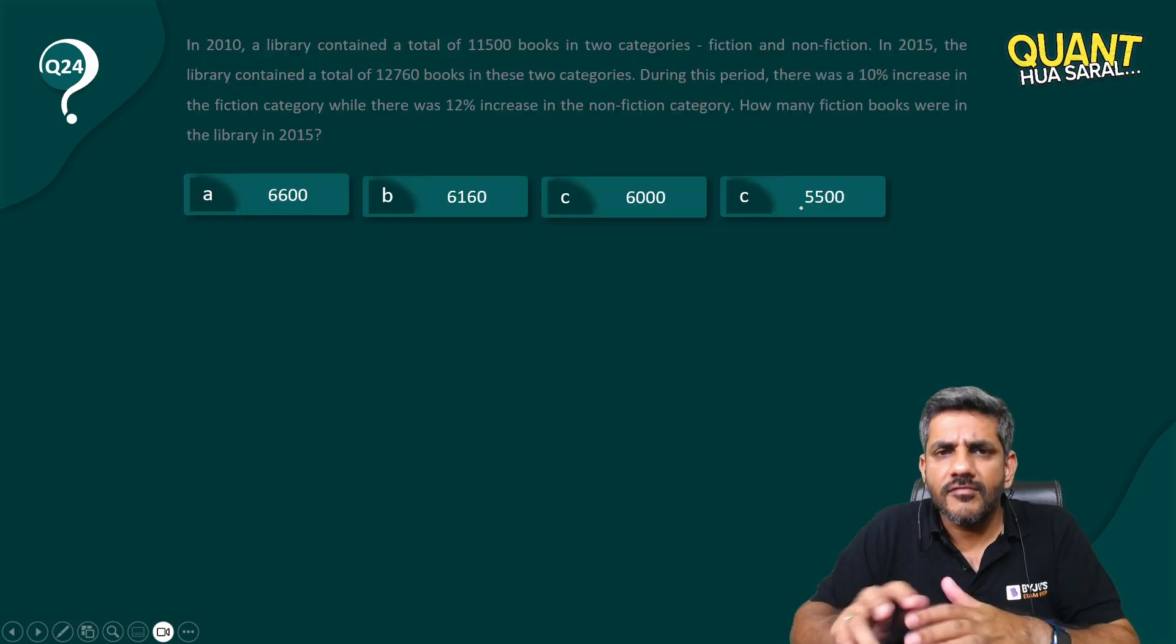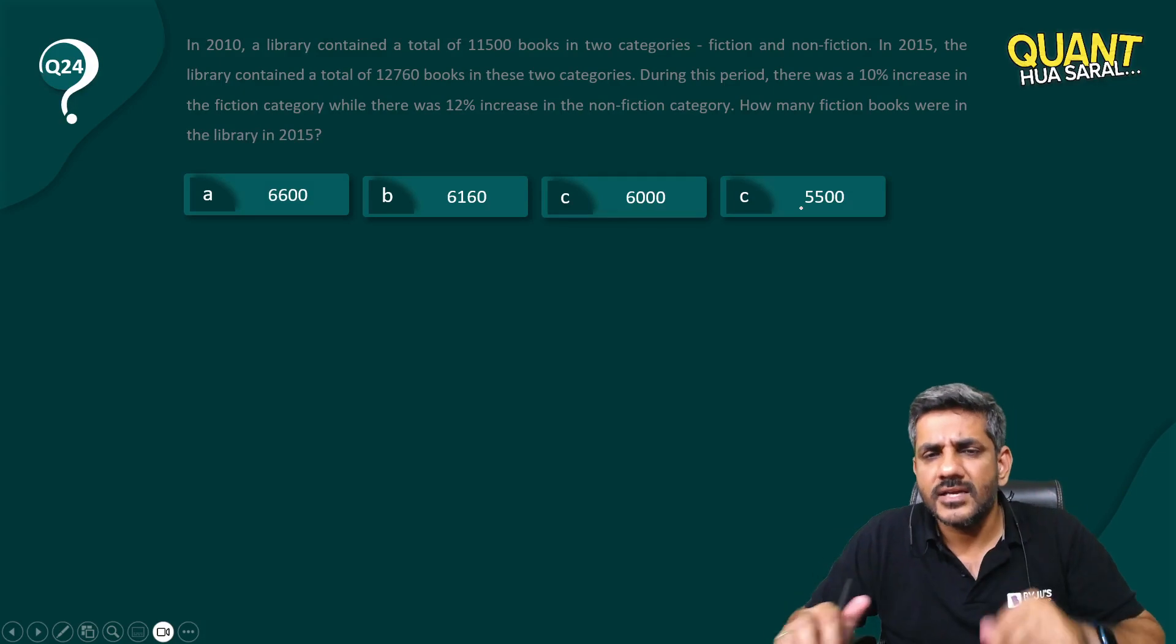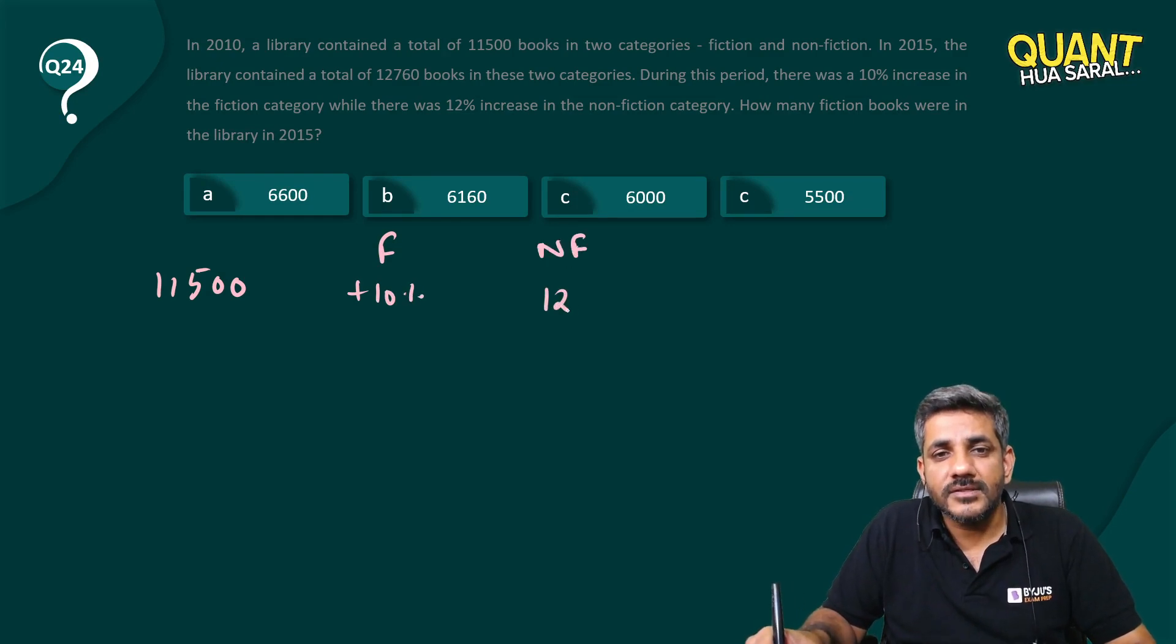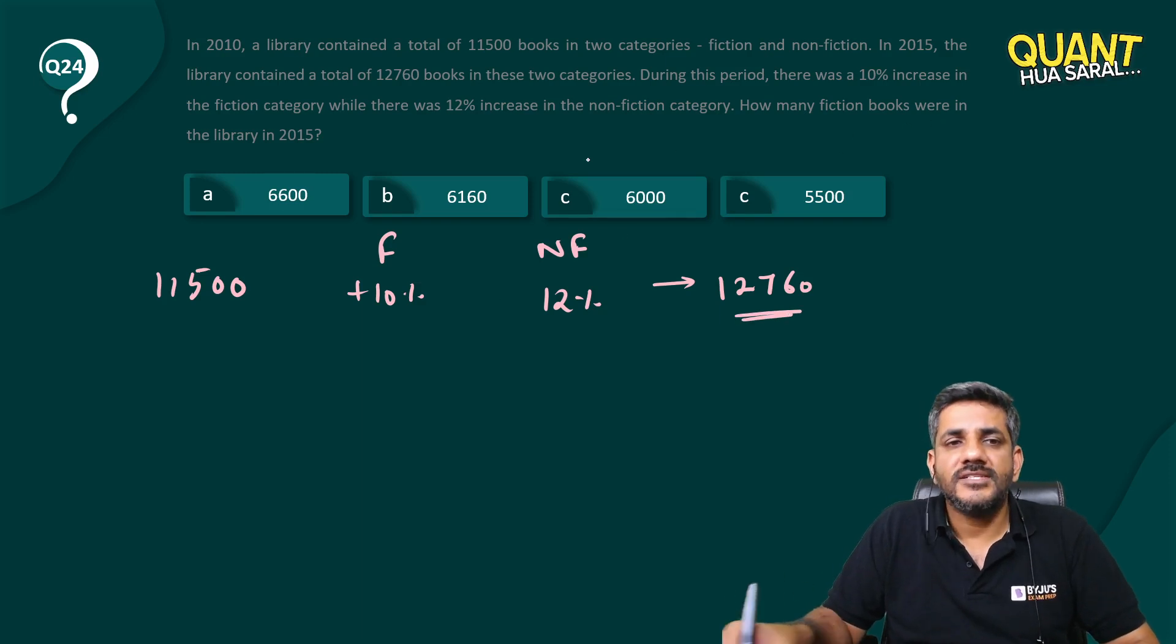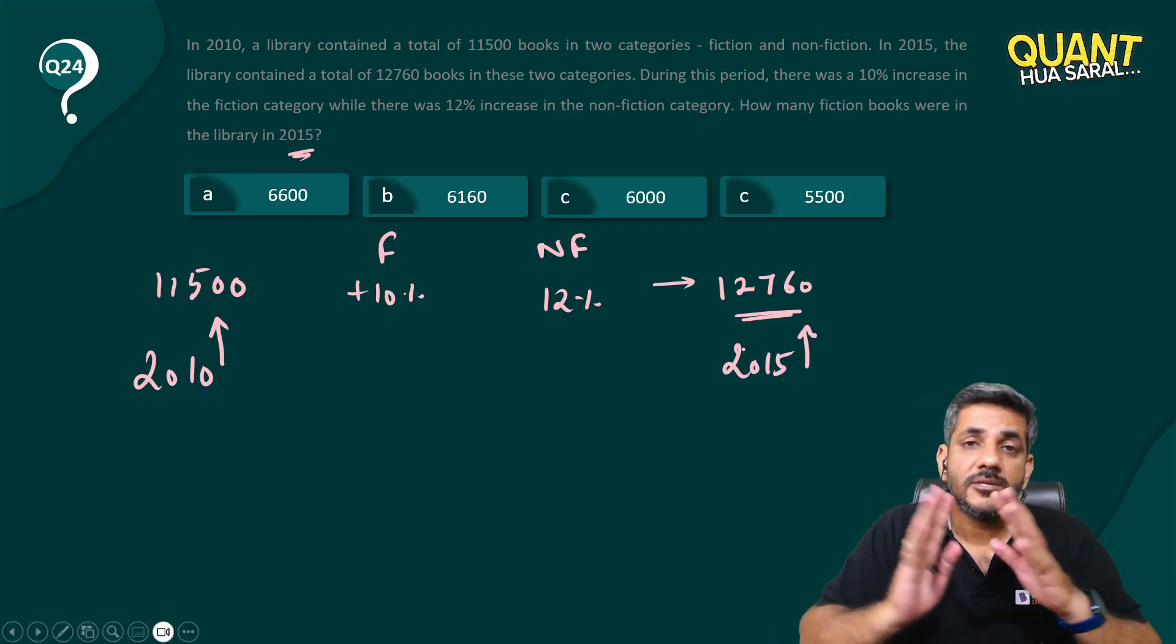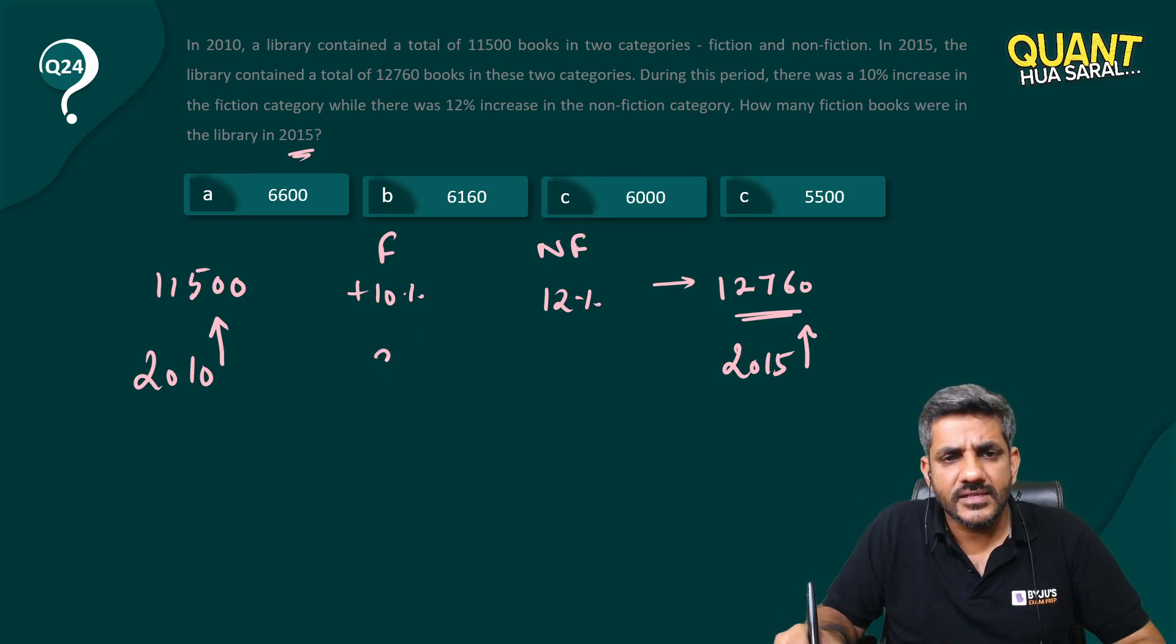I will be discussing actually multiple ways of doing it and all those ways actually can make the question easy. So I am just talking about those one by one. He says initially the number of books were 11,500. Fiction increased by 10%, non-fiction increased by 12%, and net-net, the new value is 12,760. Question says how many fiction books are there in the library in 2015? So there is some figure in 2010. This is the figure of 2010, and this is the figure of 2015. I want to see how much has it become in 2015, the fiction. This is what the question is asking.